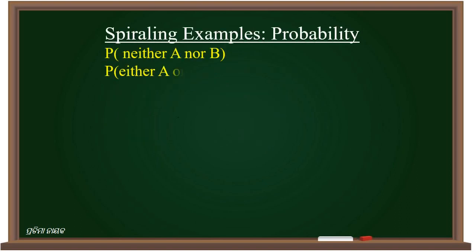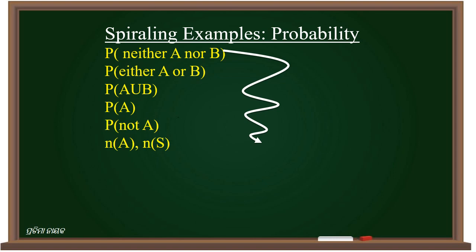This is another example from probability. Here see, we started from the concept from below: number of elements in A, number of elements in sample space, then probability of not A, probability of A, probability of A union B, probability of either A or B, probability of neither A nor B. So this is a very simple example where you can start from simple to complex. We call this spiraling.